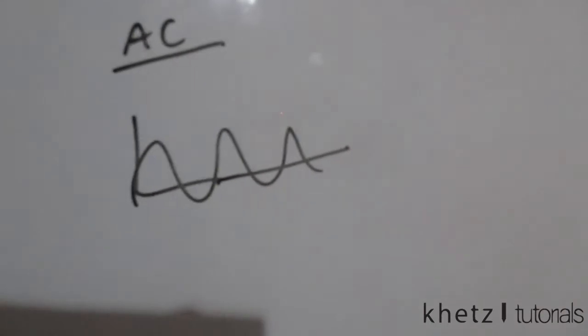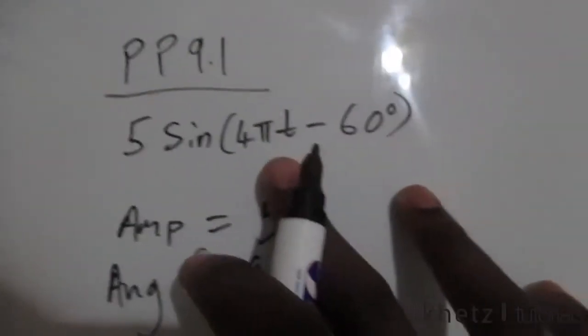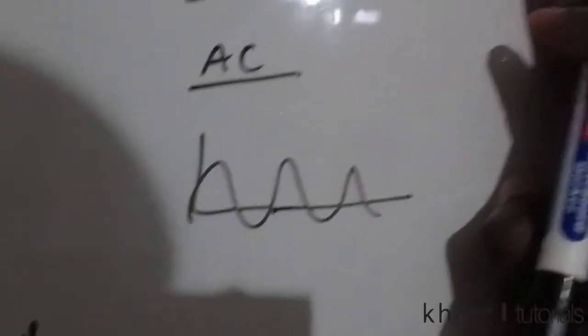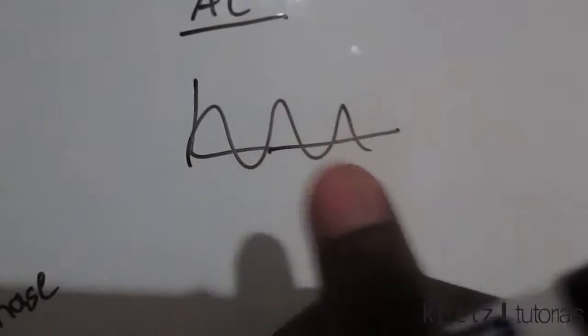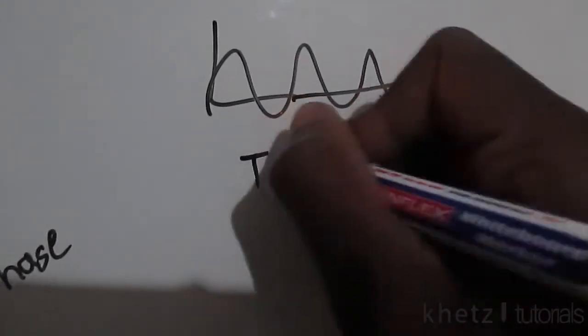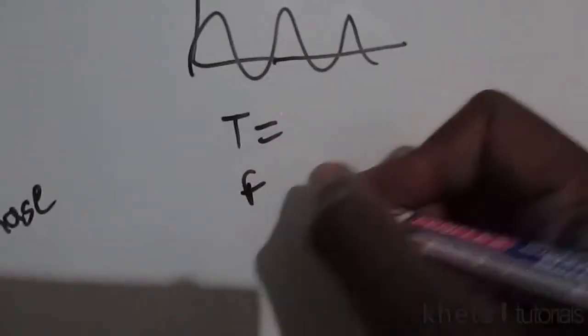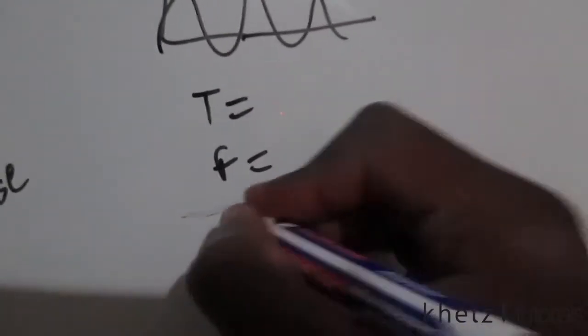But now we're dealing with AC, which is time varying and is represented by a signal which is of this form. Now this signal is time varying, and that is why we have t in here because it's dependent on time. We also have a phase which controls the shift of this, and this is also a periodic signal, and therefore we are interested in period and frequency.